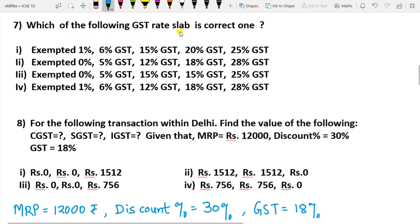Question 7: Which of the following GST slabs is the correct one? The correct GST slabs are 0, 5, 12, 18, and 28 percent. So option 2 here is the correct option.